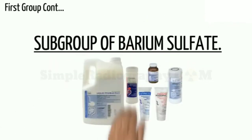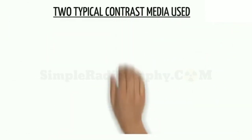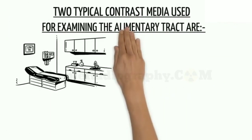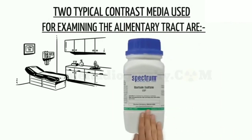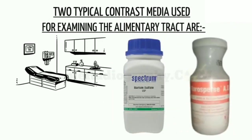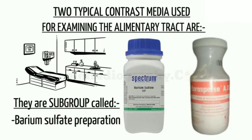Subgroup of Barium Sulfate: Two typical contrast media used for examining the alimentary tract are Barium Sulfate USP and Baris Purse. Since they are both based on Barium Sulfate, they form a subgroup called Barium Sulfate Preparations.